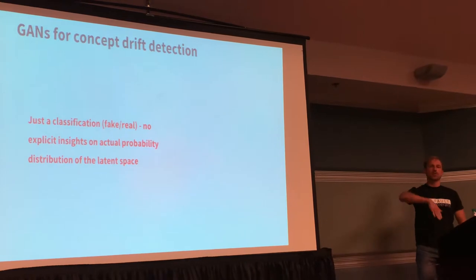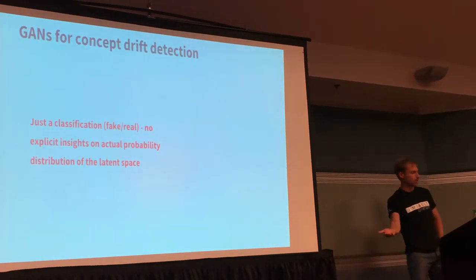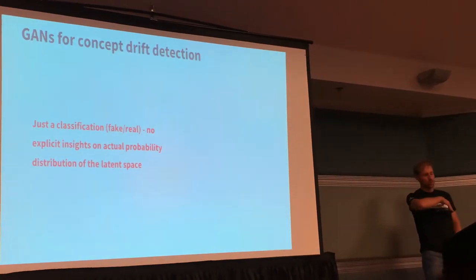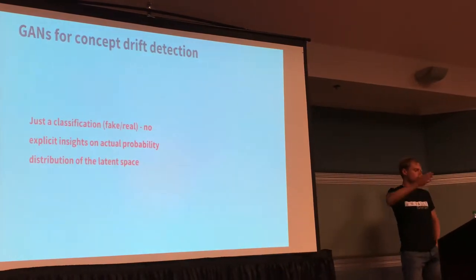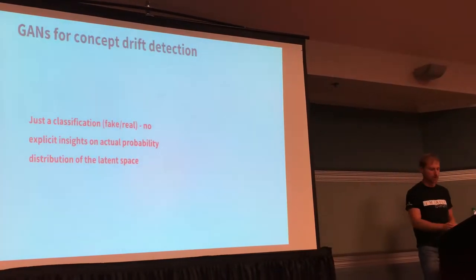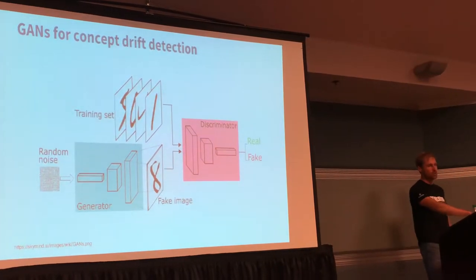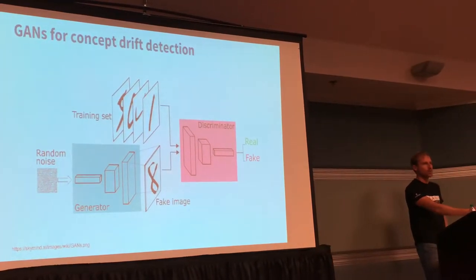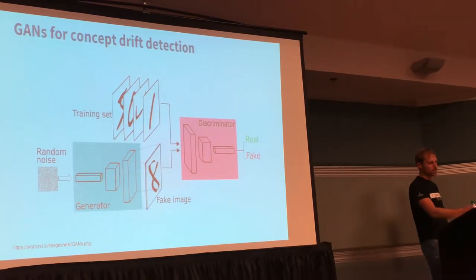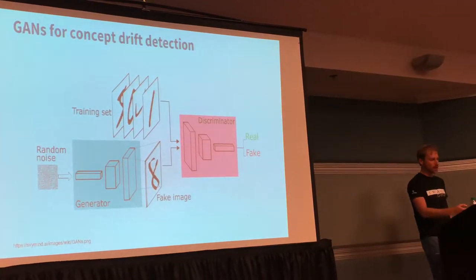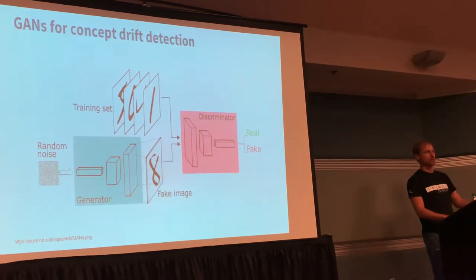Against just a classification of fake-or-real or drift-or-not-drift, we don't have explicit insights on the actual probability distribution of the latent space. That random noise generator is basically what we're trying to analyze, and it's not analyzable because there's no explicit representation.